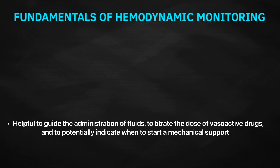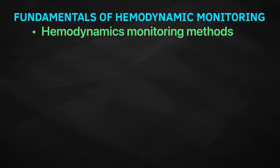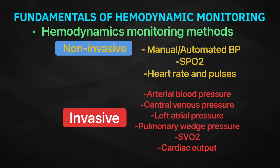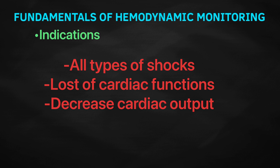Because organ blood flow cannot be directly measured, non-invasive and invasive mechanical methods must be used. Non-invasive hemodynamic monitoring includes manual or automated blood pressure, oxygen saturation, heart rate, and pulses. Invasive monitoring includes arterial blood pressure, central venous pressure, left atrial pressure, pulmonary wedge pressure, mixed venous oxygen saturation, and cardiac output measurement. These methods provide quantitative information about vascular capacity, blood volume, pump effectiveness, and tissue perfusion. Indications for hemodynamic monitoring include all types of shock states — cardiogenic, neurogenic, anaphylactic, septic, and hypovolemic shock — as well as loss of cardiac function and decreased cardiac output.